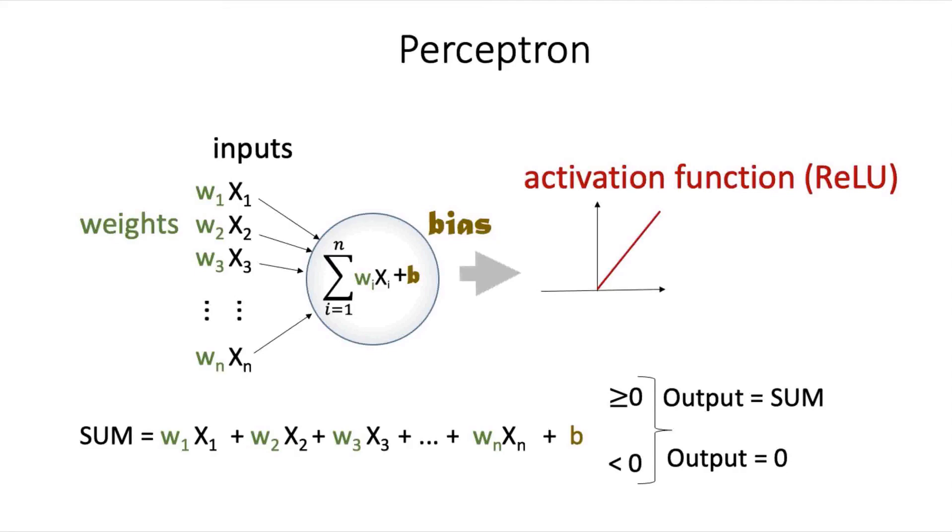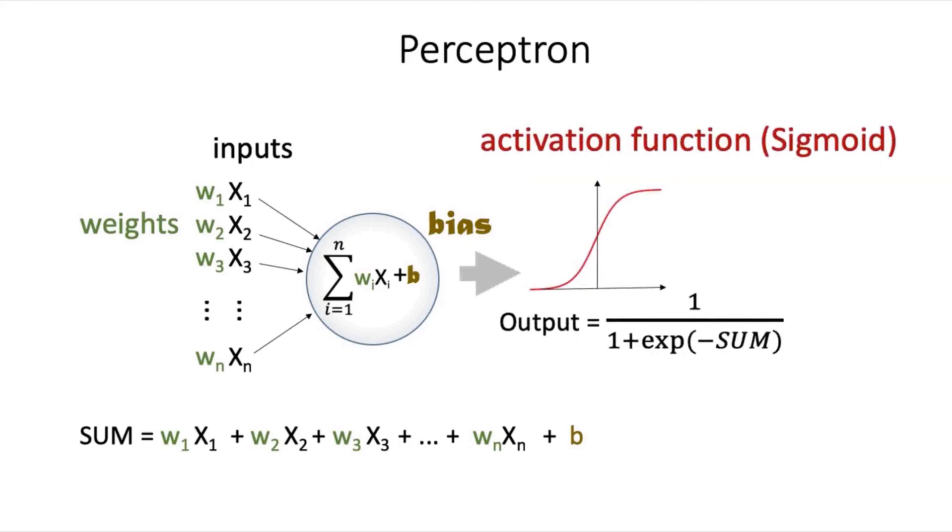Another common activation function is the sigmoid, which acts like a smoother version of the step function.